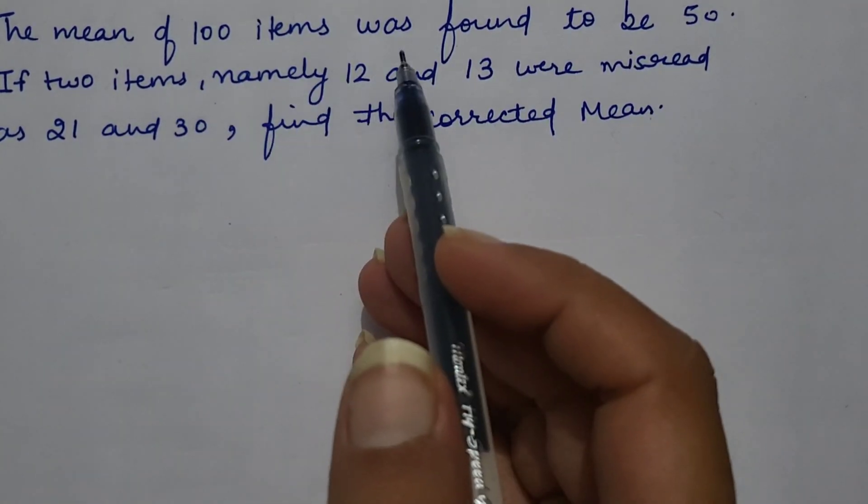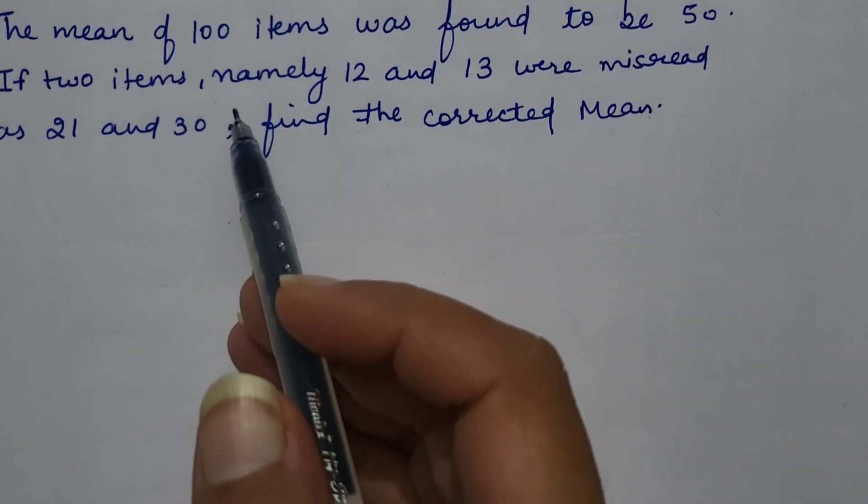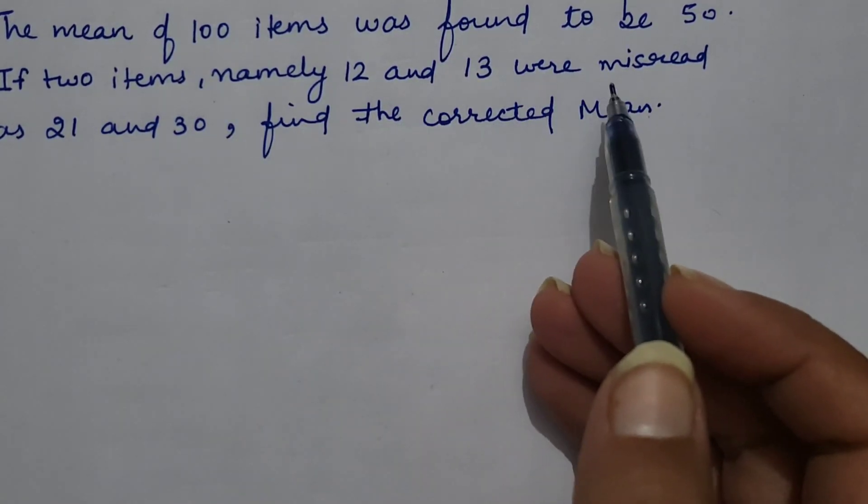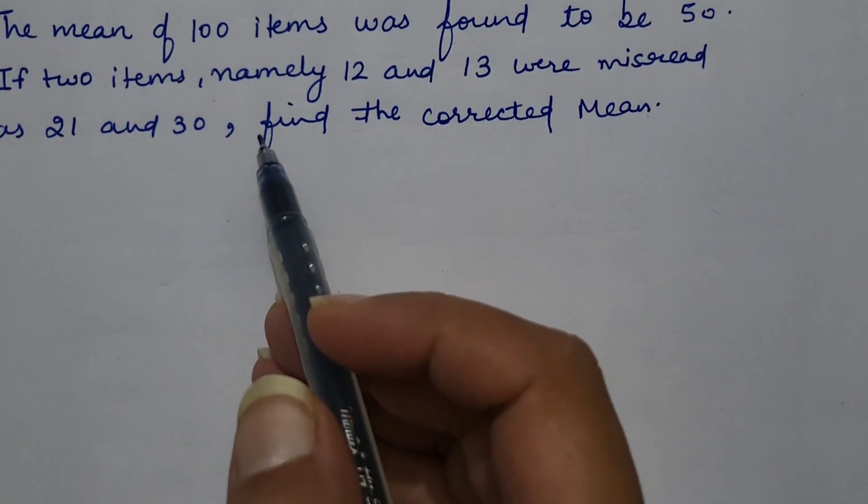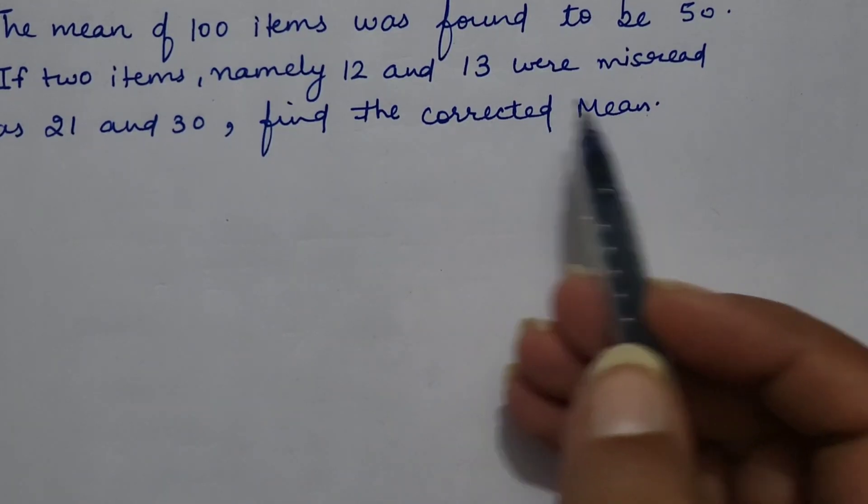Mean of 100 items was found to be 50. If 2 items, namely 12 and 13, were misread as 21 and 30, find the corrected mean.